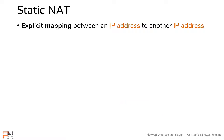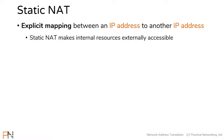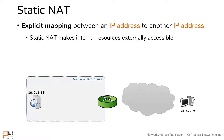The overall goal of a static NAT is to make an internal resource externally accessible. Here we have a topology with an internal host with the IP address 10.2.2.33, and we also have an external host out there somewhere on the internet.